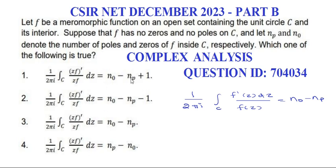Let's see the left-hand side so that all the options. The left-hand side is 1 over 2πi integral over C, zf' divided by zf dz. Therefore,